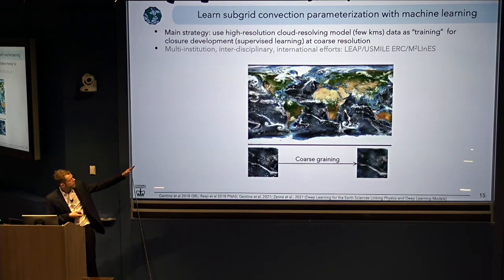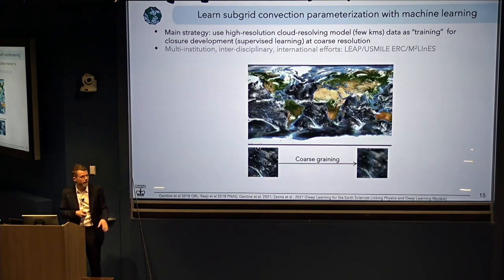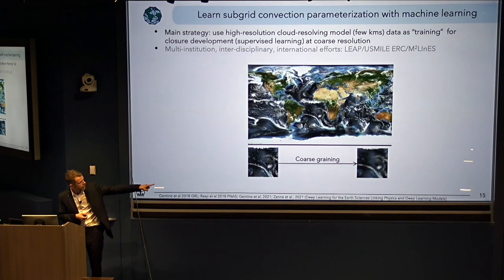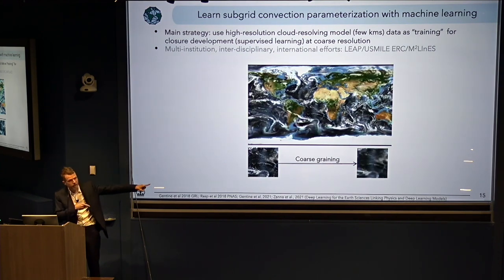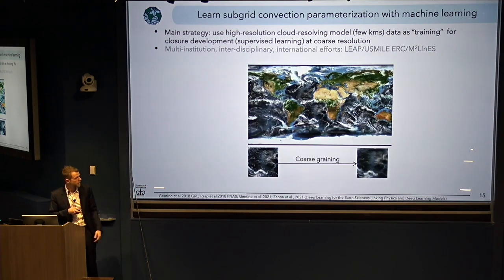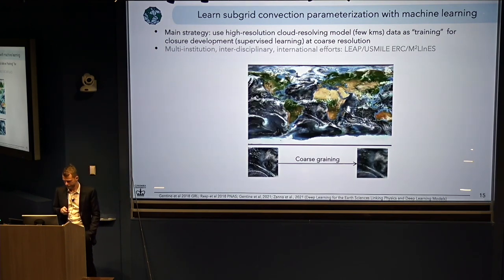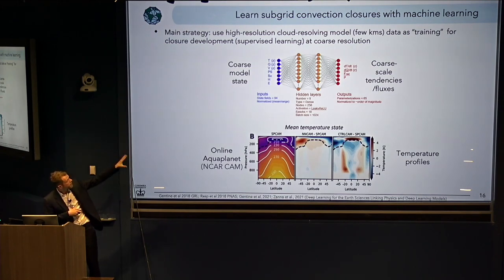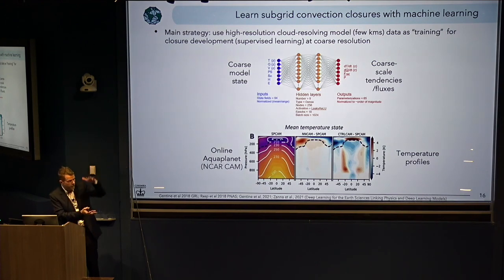What we'll do is use what we call a global cloud-resolving simulation at roughly 2.5 kilometers resolution. We're going to coarse-grain that to 100-kilometer resolution, which is equivalent to the climate model simulation scale. Now we're going to try to learn the salient features at that coarse-scale resolution based on the fine-scale resolution — trying to make up for the fact that we don't have that resolution. Our strategy is quite simple: we have the coarse-scale state — temperature, moisture, and wind in the entire atmospheric profile — and we'll try to predict the tendency, so the rate of change of temperature and moisture, basically the heating and moistening of the atmospheric column as a function of the different levels, at the coarse-scale resolution of about 100 kilometers.